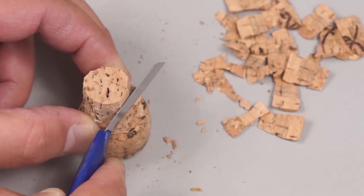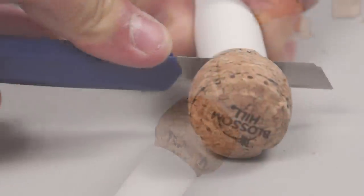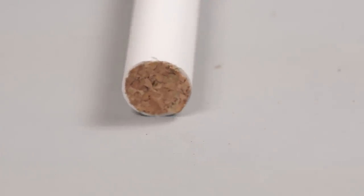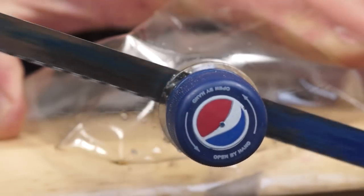A trimmed down core can be pushed snugly into one end to form a stopper. And for the other end the neck and cap of a drinks bottle can be cut off with a hacksaw.